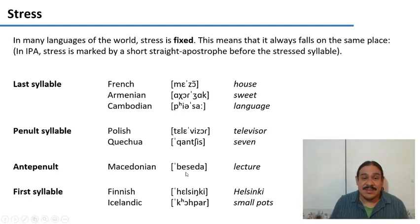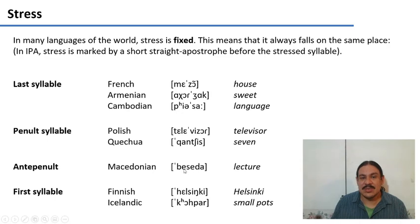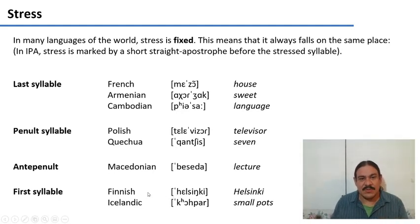In Macedonian the stress is fixed on the antepenult — two from the last. 'Beseda' means 'lecture,' and for every word with three or more syllables the stress is always on the antepenult. There are also languages where the stress falls on the first syllable — for example in Finnish we have 'Helsinki,' and in Icelandic we have 'koppar' meaning 'small pots.'